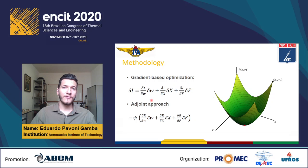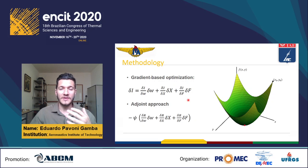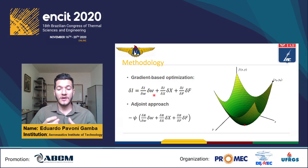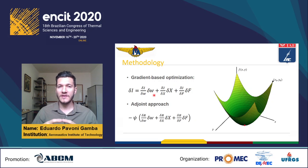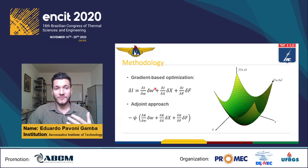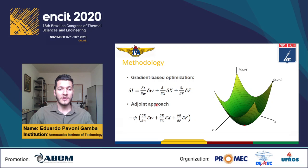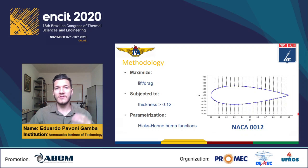Regarding the airfoil and the flow around it, this first equation shows the calculation of the gradient of a cost function I, where the first term is related to flow variables. The problem is that in aerodynamic optimization using CFD applications, the calculation of this first term is very expensive. That's why we are using the adjoint approach: inserting the second equation into the first one, we can choose the Lagrangian multiplier to eliminate this expensive term.